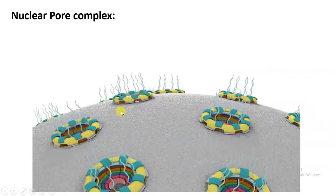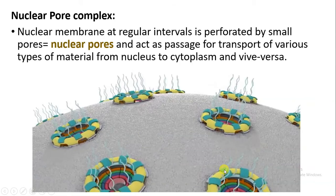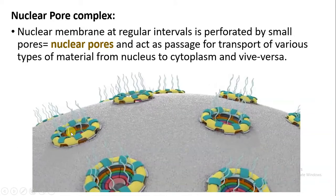Next we will study the nuclear pore complex. As you can see on the nuclear membrane surface, there are some pores present — these are called as nuclear pores. At every interval there are perforations present in the nuclear membrane, and these perforations are called as nuclear pores. These nuclear pores have a very important function: they help in the transport of various types of material from the nucleus to the cytoplasm and from the cytoplasm to the nucleus.